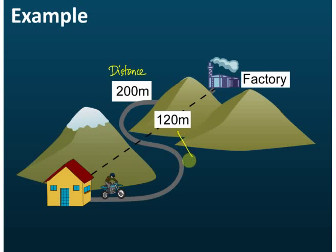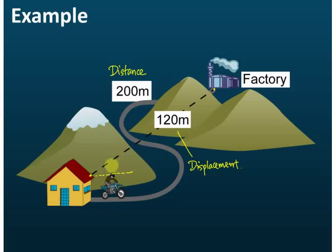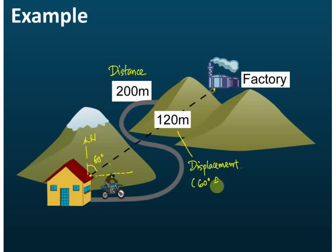If we draw a straight line from his house to the factory, the length of that straight line is 120 meters. This is the displacement — the shortest distance between these two points. For displacement, you also need to state the direction. Let's say this is north, and the angle is 60 degrees, so the direction is 60 degrees from north. You must include both the magnitude and the direction.